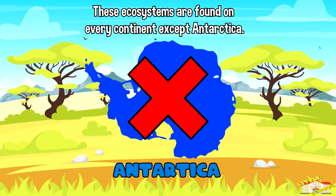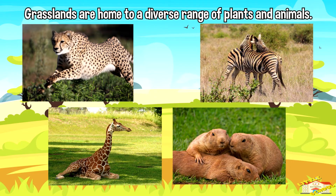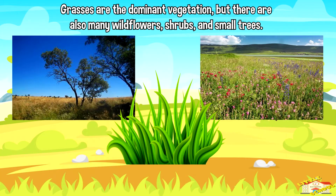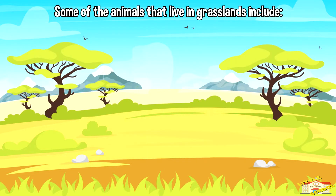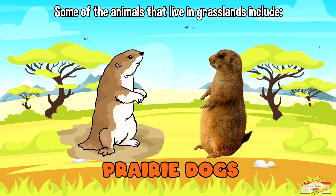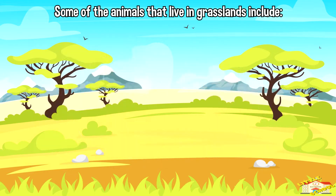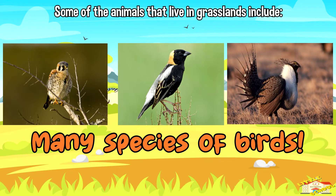Grasslands are home to a diverse range of plants and animals. Grasses are the dominant vegetation, but there are also many wildflowers, shrubs, and small trees. Some of the animals that live in grasslands include bison, prairie dogs, coyotes, and many species of birds.